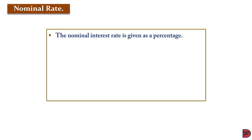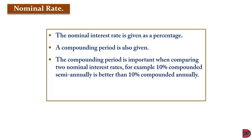With nominal rate, the interest rate is provided that is supposed to be calculated on the principal, and we are also given the compounding period. In previous examples, the period was 3 years. The compounding period becomes important when you are comparing two rates that have different periods of compounding.